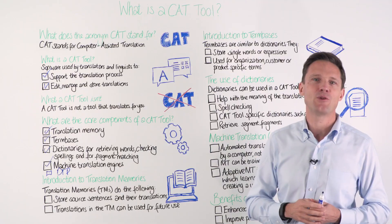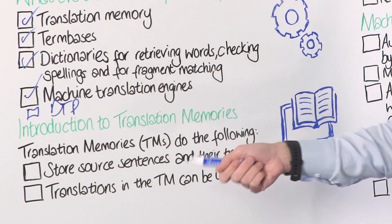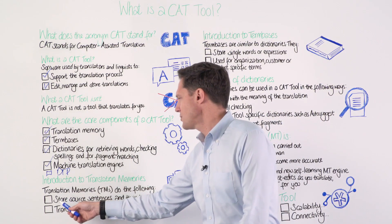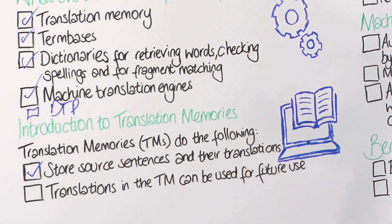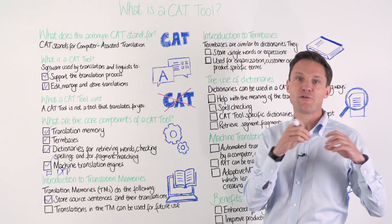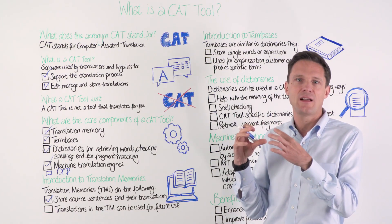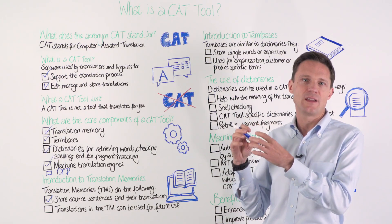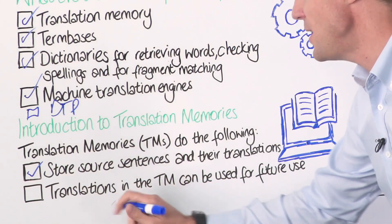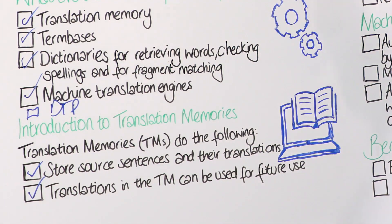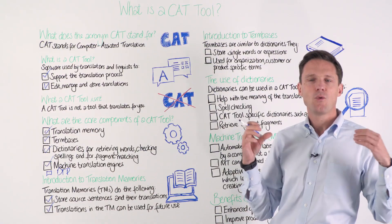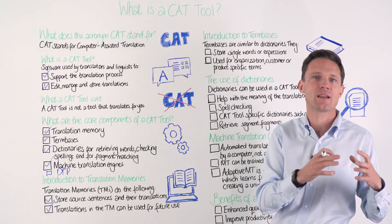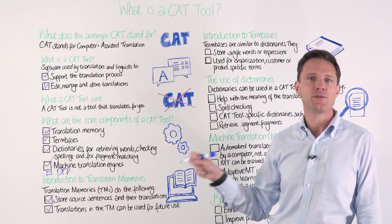Let's introduce translation memory and what it is. The translation memory does different things. First, it stores source sentences and their translations. It basically stores the phrase you need to translate, and once you translate it manually it stores that translation — that's the key principle. The second thing is that you can use it again and again. Once you have translated a sentence, when a similar or exact sentence appears again, the translation memory retrieves it and gives you the translation.